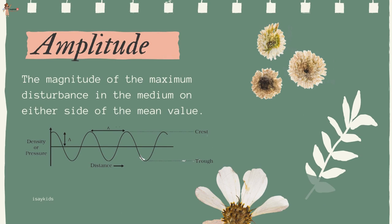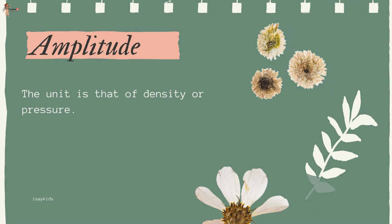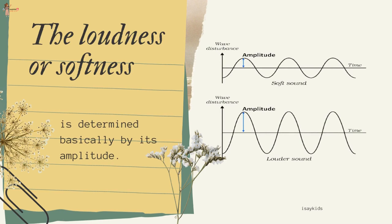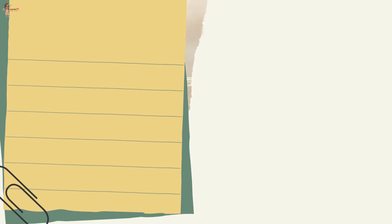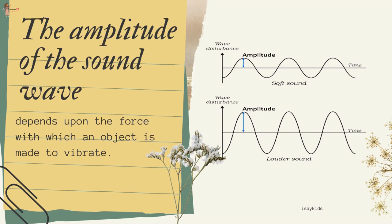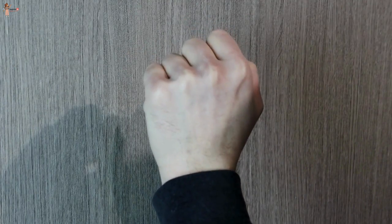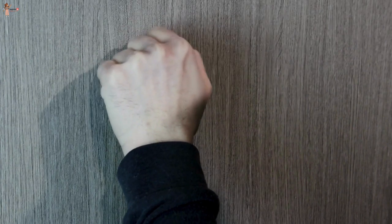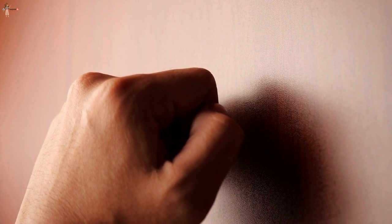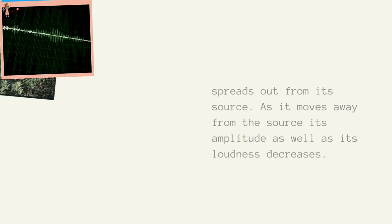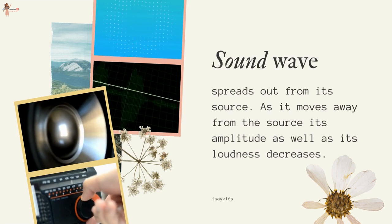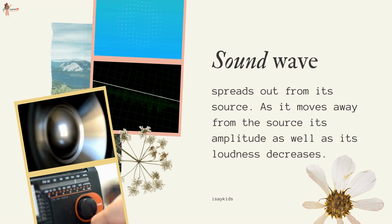Objects of different sizes and conditions vibrate at different frequencies to produce sounds of different pitch. The magnitude of the maximum disturbance in the medium on either side of the mean value is called the amplitude of the wave, usually represented by the letter A. For sound, its unit will be that of density or pressure. The loudness or softness of a sound is determined basically by its amplitude. The amplitude of the sound wave depends upon the force with which an object is made to vibrate. If we strike a table lightly, we hear a soft sound because we produce a sound wave of less energy. A sound wave spreads out from its source — as it moves away, its amplitude as well as its loudness decreases.